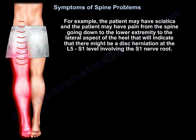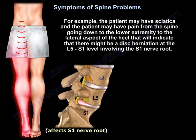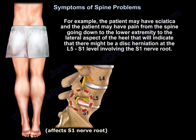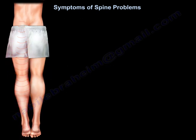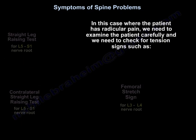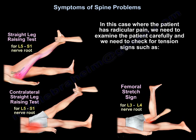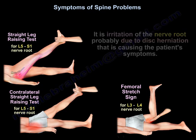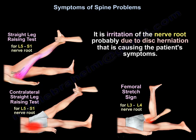For example, the patient may have sciatica, with pain from the spine going down to the lower extremity to the lateral aspect of the heel. That would indicate a disc herniation at L5-S1 involving the S1 nerve root. With a patient who has radicular pain, we need to examine carefully and check for tension signs such as straight leg raising test, contralateral straight leg raising test, or femoral stretch sign — all indicating irritation of the nerve root, probably due to disc herniation.